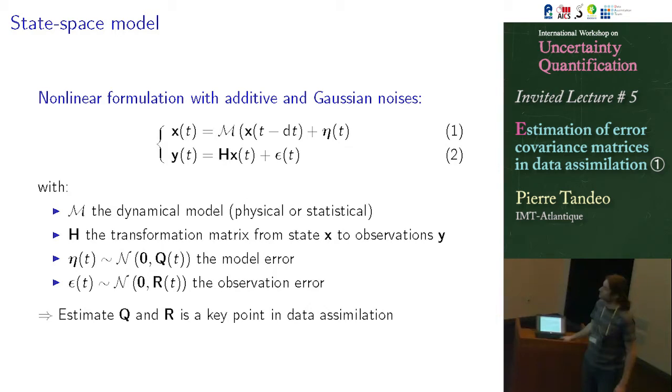So basically, these errors are supposed to be unbiased. And we note the covariance of this error, Q and R. So these are the official notation, I will say, of data assimilation. So don't forget this, Q is the error of the model and R is the error of the observation. So it's just to plan what we will do. And so the goal of this talk is to try to see if there are different methods to estimate Q and R. So this is very important in practice in data assimilation.